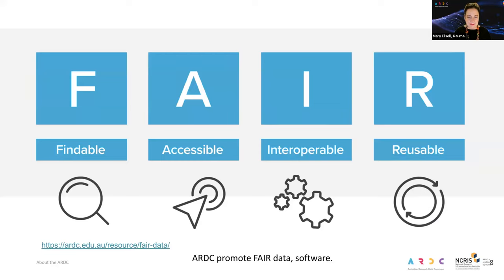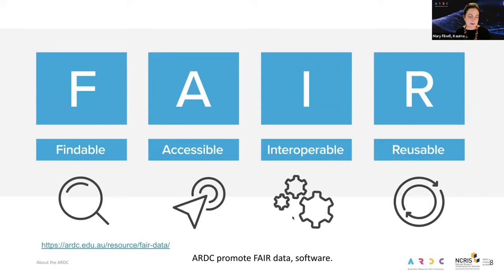FAIR stands for Findable, Accessible, Interoperable and Reusable, and FAIR underpins everything we do. The FAIR principles for research data management were published in 2016 and relate to making digital assets findable, accessible, interoperable — so all of our things can work across different platforms — and also reusable. We support the FAIR and CARE principles and ask for data to be as open as ethically possible, because research inputs and outputs drive research impact, quality, translation and innovation. Translating these principles into practice will vary for each discipline.